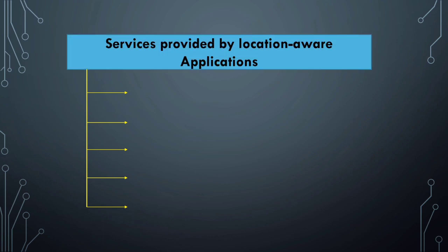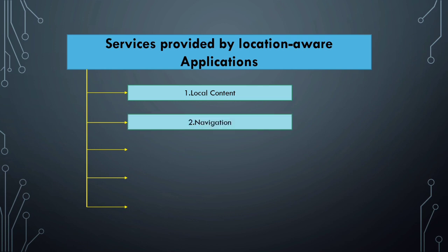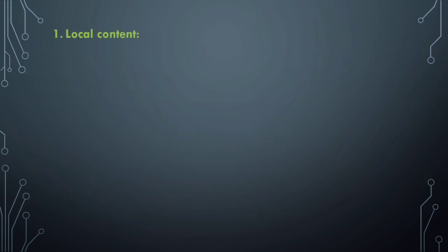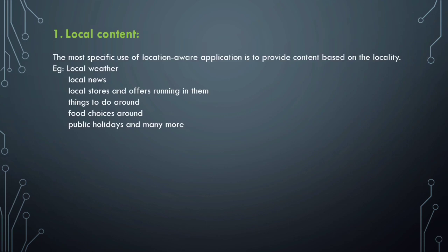The services provided by location-aware applications are: local content, navigation, search and explore locality, advertisement, and tracking. Let's look at each one briefly. The first is local content. The most specific use of a location-aware application is to provide content based on locality — like local weather, local news, local stores and offers running in them, things to do around, food choices, public holidays, and many more.